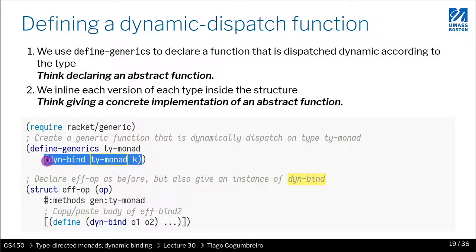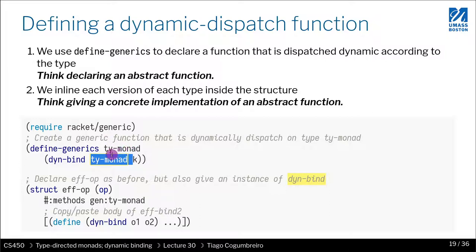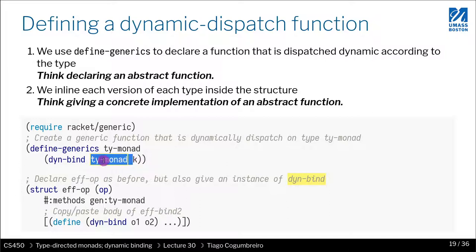So in the first parameter, what I'm saying is I want to define a function called DynamicBind — that's the name I'm giving. This is my dynamic bind; it could be any name you choose. And then I can use this special name TyMonad to describe the placeholder where the defined generic is going to be doing the dynamic dispatching. Whenever I call DynamicBind, dynamic dispatching is happening on the type of the first parameter.